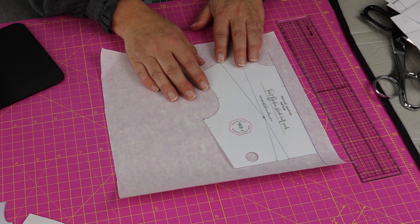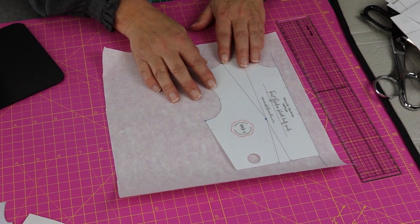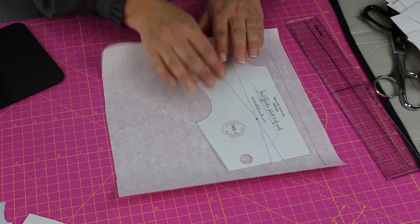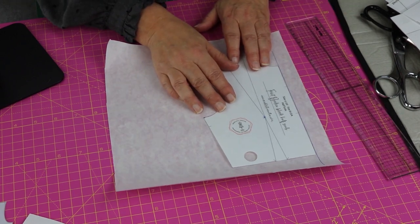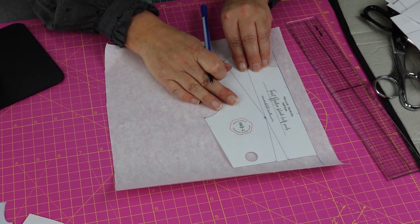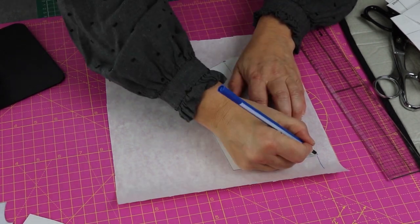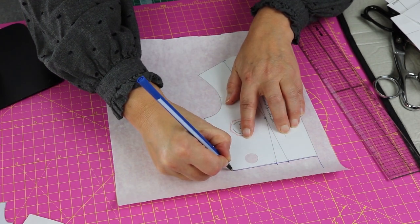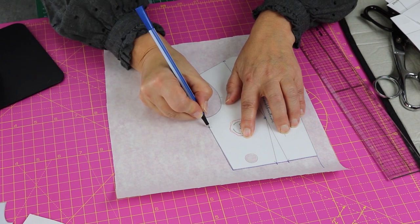This is the basic bodice block in half scale. So the first thing I do is I place a line on my piece of paper and I'm going to trace around my basic bodice block, marking in all the dots and all the lines. And don't forget you'd be using a pencil, I'm using a blue pen so that you can see what I'm doing.